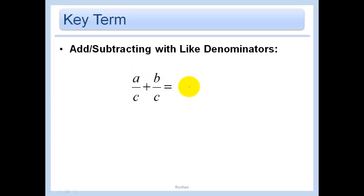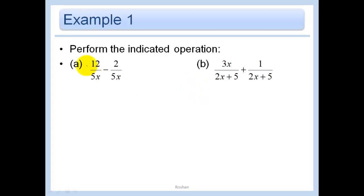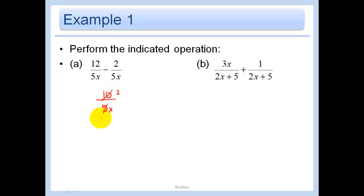A over C plus B over C — C is a common denominator, so we have A plus B on top. So when we have 12 over 5x minus 2 over 5x, 5x is the common denominator, and we just do 12 minus 2, which is 10. From there we simplify: divide the top and bottom by 5, and we get 2 over x as our final answer.